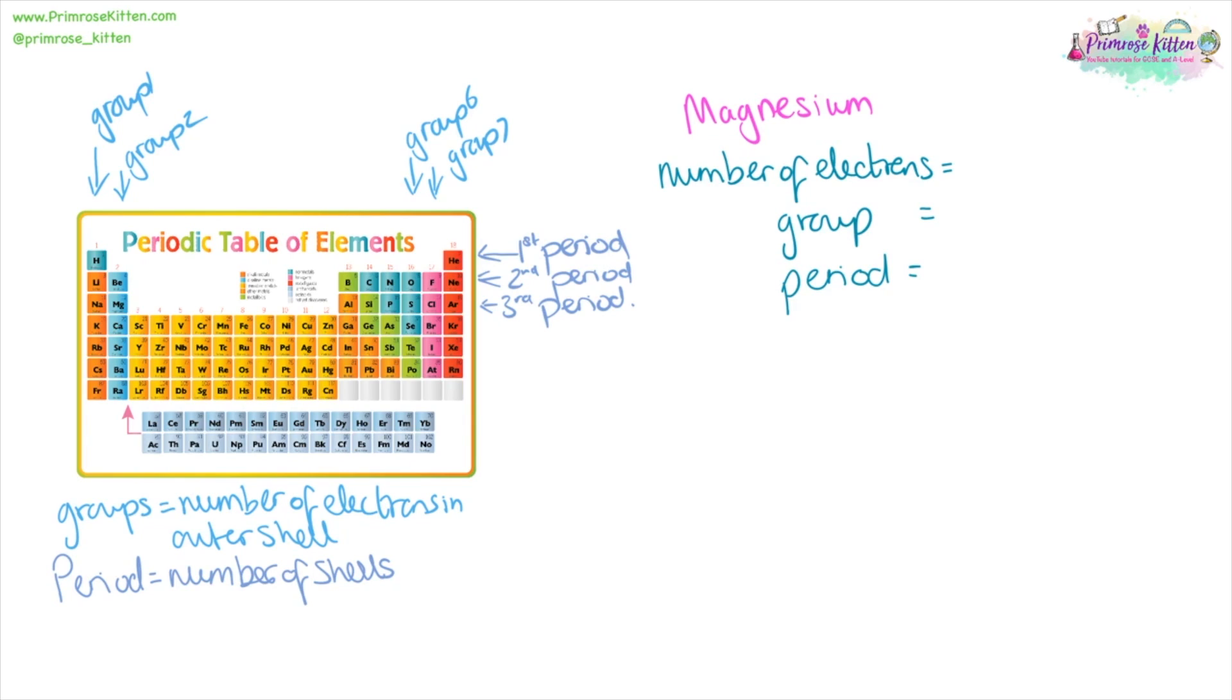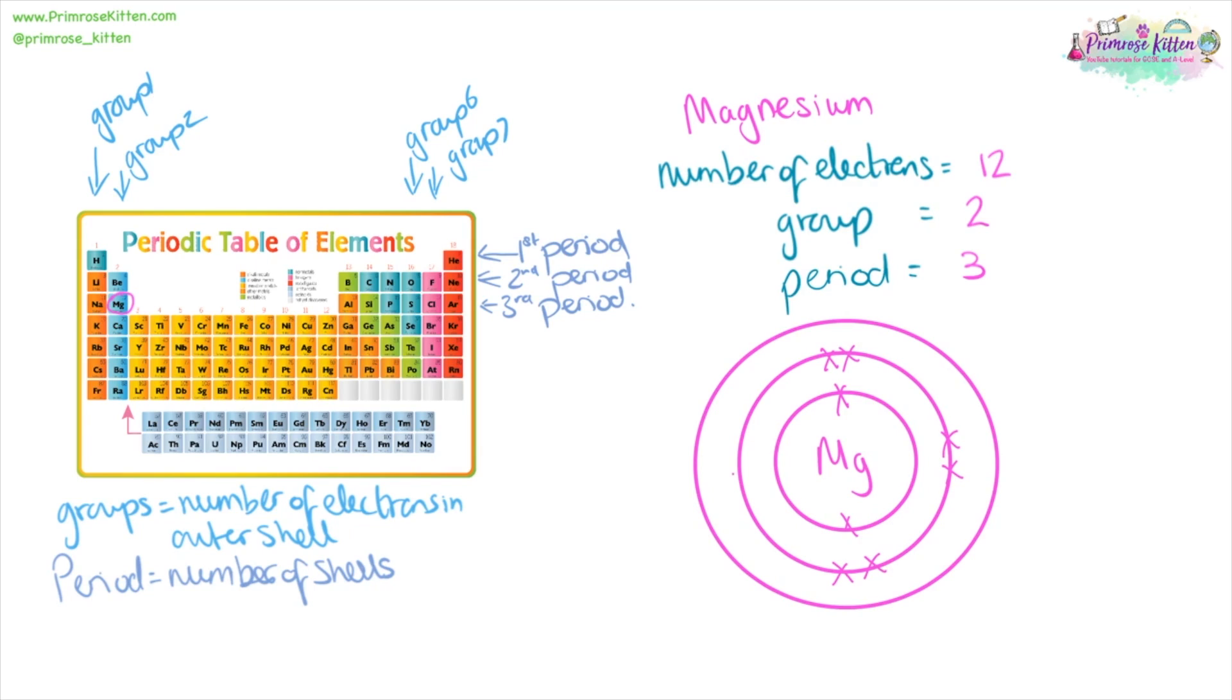We can use this information to tell us about the electronic configuration. Here we have magnesium. The number of electrons it has is 12. It is in group two, and it is in period three. So that tells us it has 12 electrons in total. It has two electrons on the outer shell, because it's in group number two. And it has three shells because it is in period number three. So when we want to draw the electronic configuration of magnesium, we know it's in period three. It's going to have three shells. The first thing we can do is draw three shells. Two electrons go on the first shell. Eight go on the second shell. That brings us up to 10. Then 11, 12, two electrons on the outer shell.